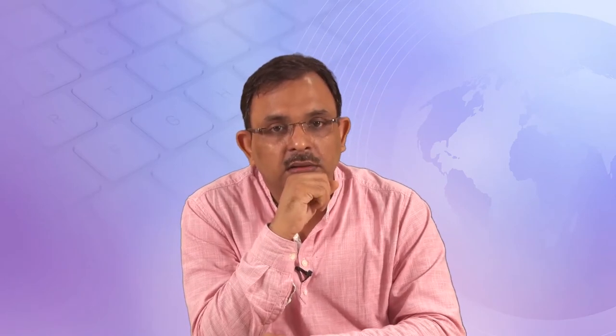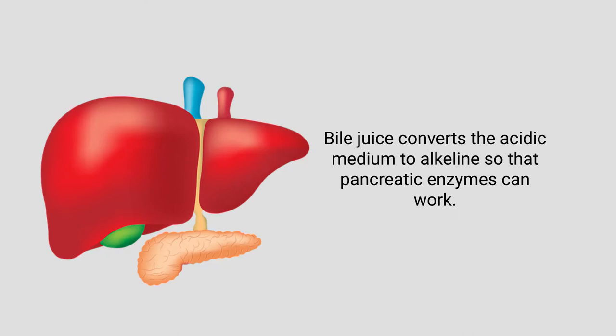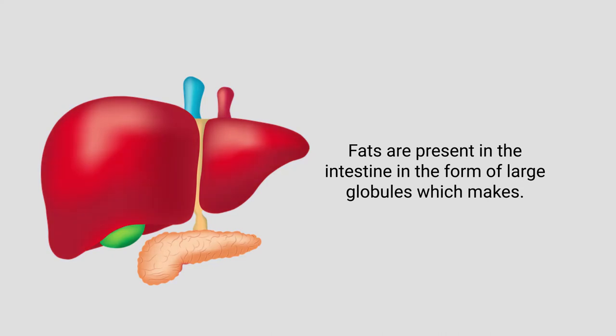Bile does two very important functions: it helps in fat digestion, and it converts the acidic medium coming from the stomach to an alkaline medium, because pancreatic enzymes require an alkaline medium to function — unlike pepsin which needs acidic medium. So if someone has a problem of irregular bile supply, they may face acidity and pain because the acidic medium may remain in the intestine.